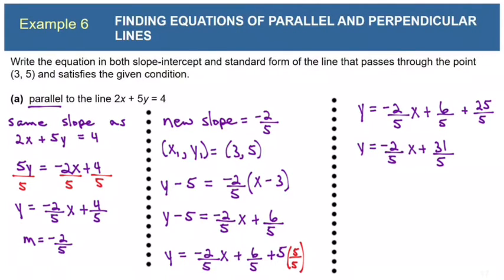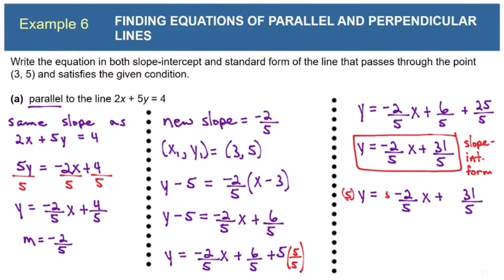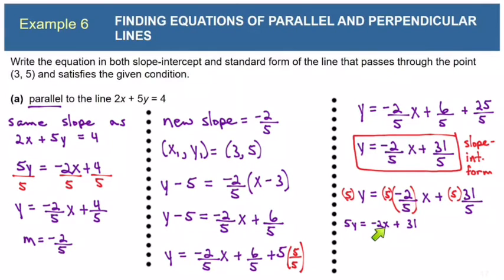Now we want to put this equation in standard form, so we'll eliminate the denominators by multiplying both sides by 5. The 5s cancel, giving 5y equals negative 2x plus 31. To get to standard form, we move the x term to the left side so it can be positive: 2x plus 5y equals 31. Since 2, 5, and 31 are mutually prime and all integers, this is standard form.